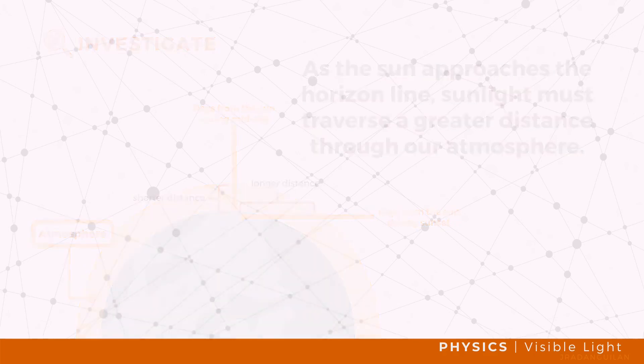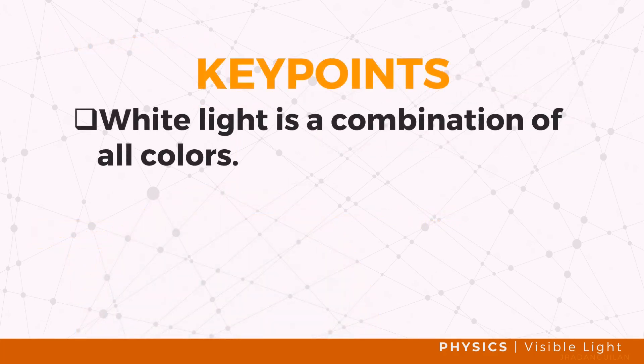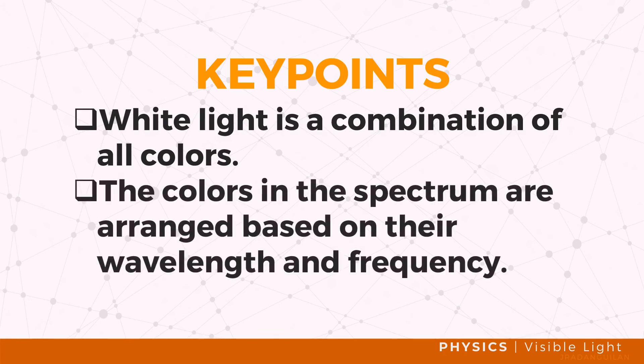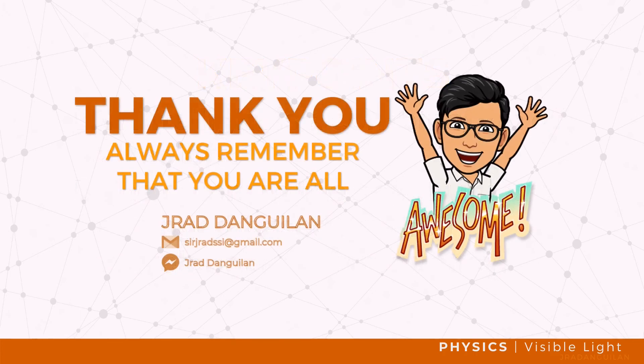In this lesson you learned that white light is a combination of all colors, and colors in the spectrum are arranged based on their wavelength and frequency. If you like more science videos, make sure to subscribe to this channel. Thank you, and always remember that you are all awesome.